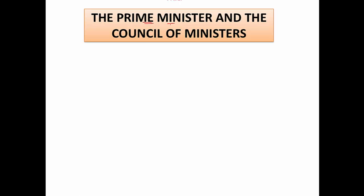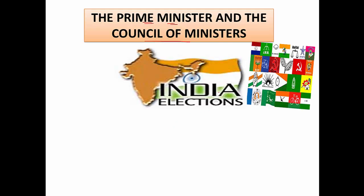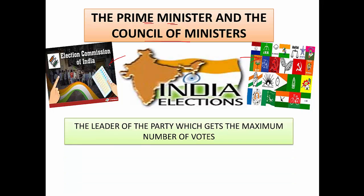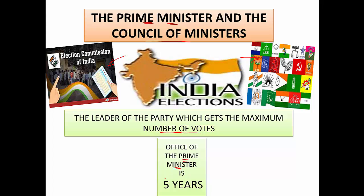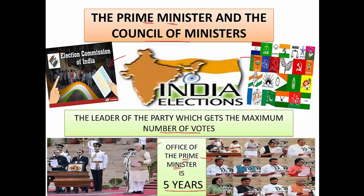India goes into general elections every five years. Different political parties across the country contest in elections conducted by the Election Commission of India. The leader of the party that gets the maximum number of votes is invited by the President to form the government and becomes the Prime Minister for a period of five years. The current Prime Minister is Narendra Modi, assisted by his Council of Ministers for the smooth functioning of the government.